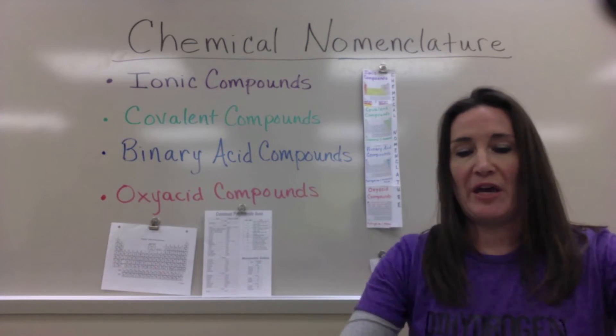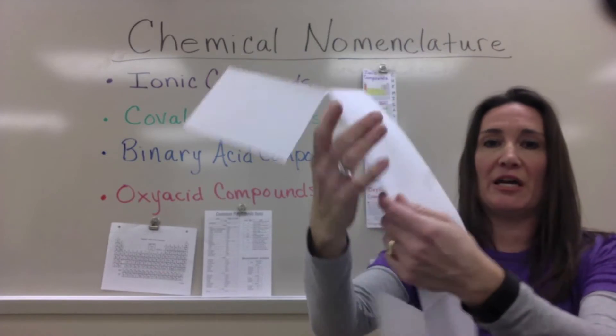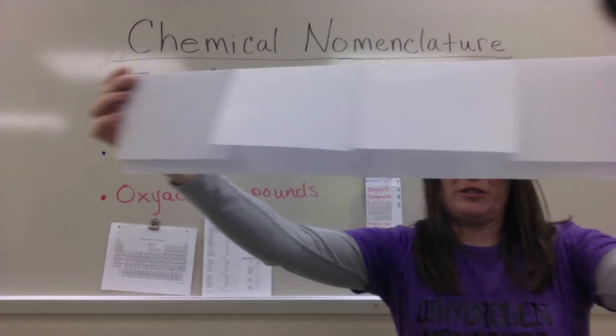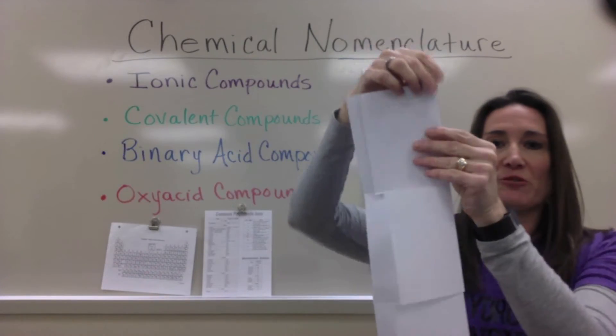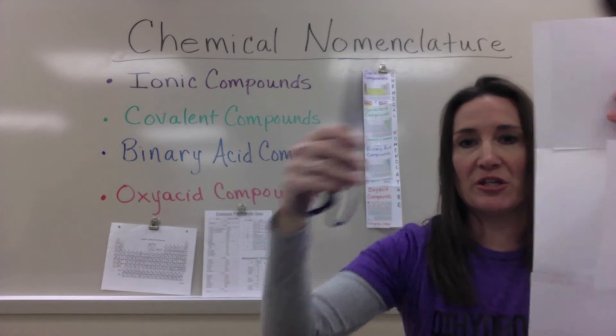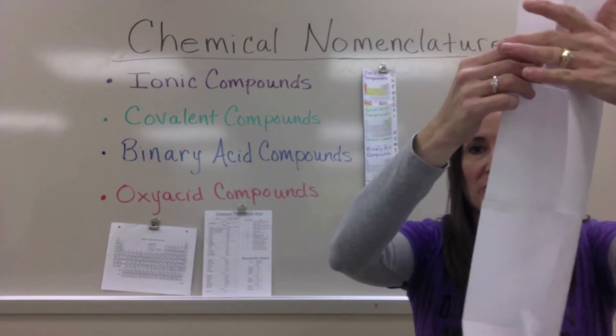After you're done doing that, you're going to tape those together so they make a really long, tall booklet. And then that's where you're going to label chemical nomenclature along the side. And then with the scissors you're going to cut free those four sections so you have four flaps.